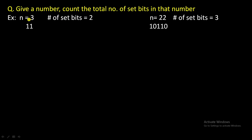What is the meaning of set bits? For example, if you are given the number 3, the binary representation of 3 is 1 1. How many bits are 1 in this binary representation? Basically both the bits are 1, so we say there are a total of 2 set bits in this number.